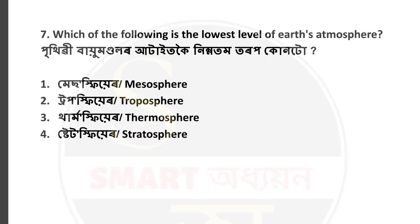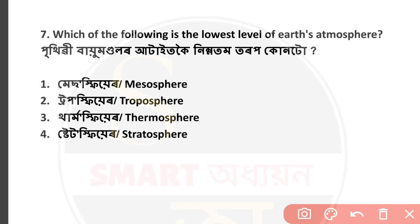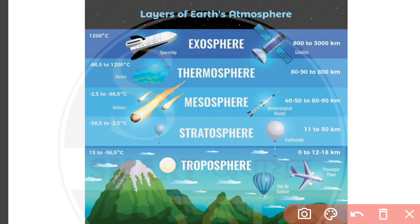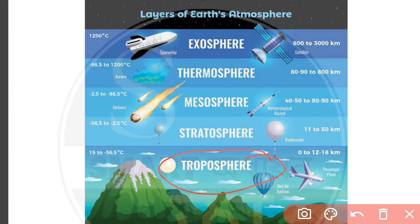Question number 7: Which of the following is the lowest level of Earth's atmosphere? If you see this atmosphere level question in an exam, the answer is the lowest level — troposphere. Option number 2 is correct. The lowest layer is troposphere, above that is the stratosphere, above that is the mesosphere.